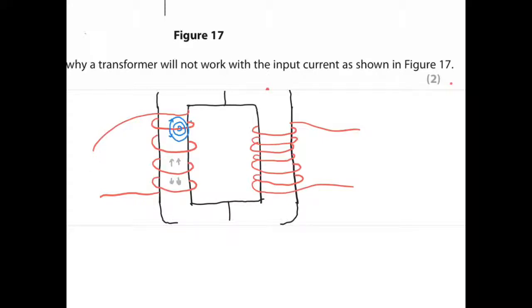So this is how a transformer works with an AC source. Current flows round one direction around the wire and that causes a magnetic field in the wire to be in one direction. Then it changes to the other direction, so you get a magnetic field reversing in the wire, backwards-forward, backwards-forward, backwards-forward.